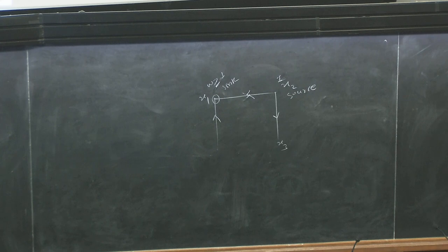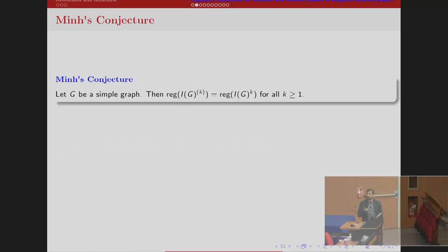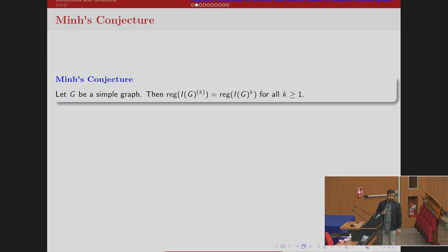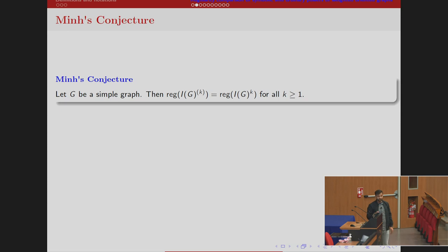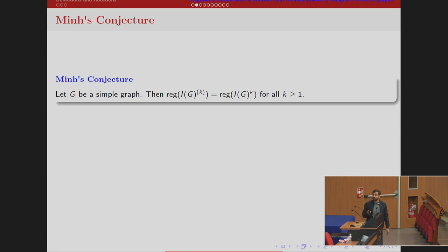Now we are ready to talk about regularity comparison of symbolic and ordinary powers of weighted oriented graphs. This is the Minh conjecture: for the edge ideal of any simple graph, the regularity of the k-th symbolic power equals the regularity of the ordinary power. One advantage of this equality is that, as Professor Dipankar mentioned, the regularity of powers of a homogeneous ideal is an asymptotic linear function, but for the k-th symbolic power this is not true in general — for monomial ideals it is bounded by a linear function but not necessarily linear. If we know this equality for those classes of ideals, we can conclude that regularity of k-th symbolic power is also asymptotically linear.